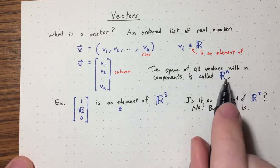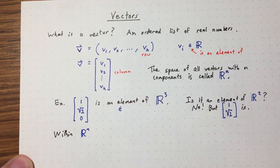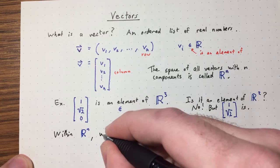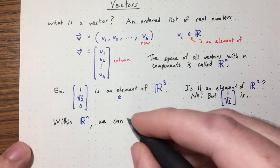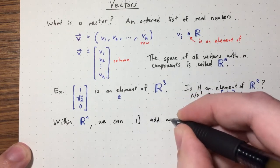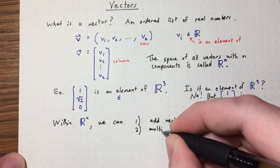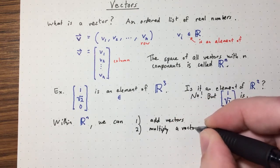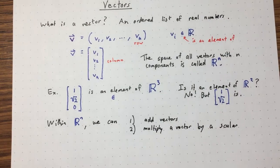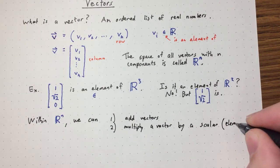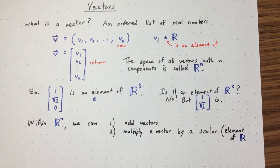Within the space R^N, what can we do with vectors? There are two basic operations. The first is we can add vectors. The second is we can multiply a vector by a scalar — a scalar being just a real number — to scale the vector.